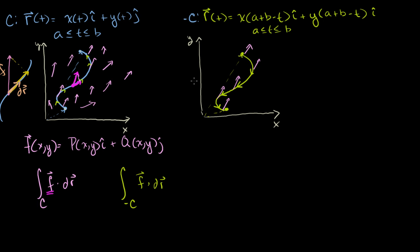Now what if our dr was going in the opposite direction, as in the reverse curve case? Drawing the same part of the curve: f looks the same, but now dr is going in the other direction — we're tracing the curve in the opposite direction. If you take f dot dr, you're taking how much of f goes in the direction of dr. The shadow of f is going in the opposite direction as dr, so you get a negative number. The intuition is that these two integrals are the negative of each other.